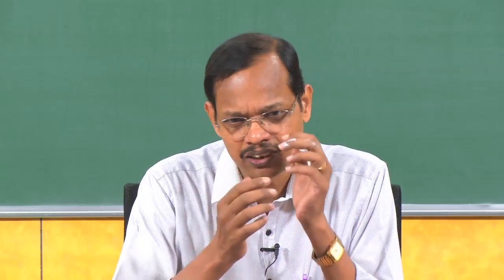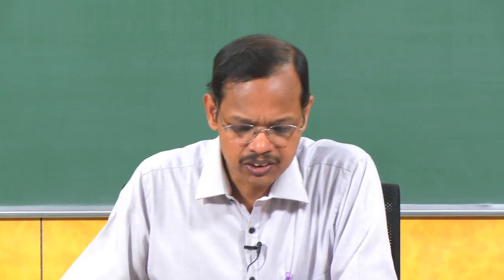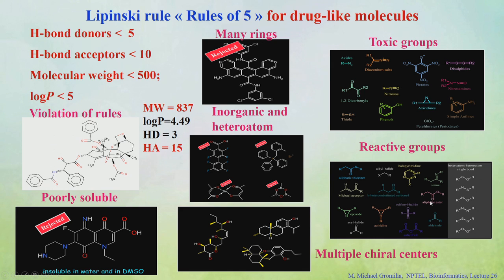When looking at available ligands, many structures can be directly rejected based on their chemical structure or Lipinski's Rule of Five. For example, one compound with molecular weight of 837 and hydrogen bond acceptors of 15 violates two aspects of Lipinski's Rule of Five. Lipinski's Rule states: molecular weight should be less than 500, hydrogen bond acceptors less than 10, hydrogen bond donors less than 5, and partition coefficient (log P) less than 5.